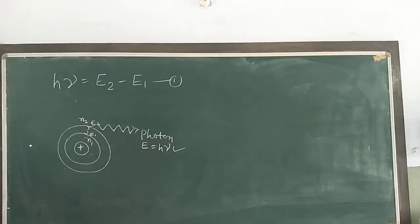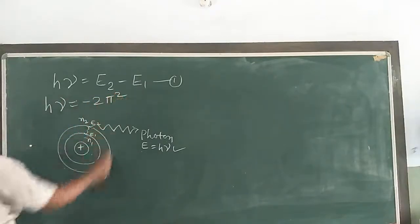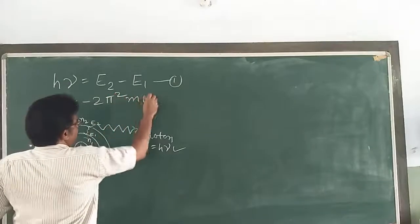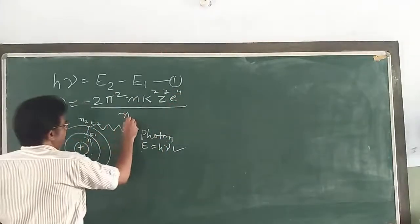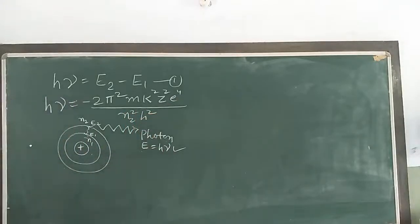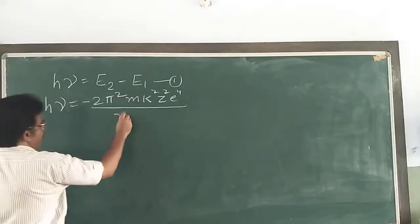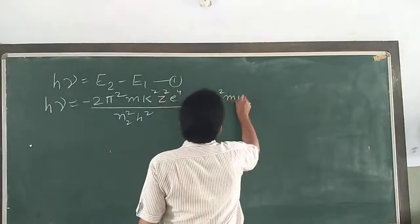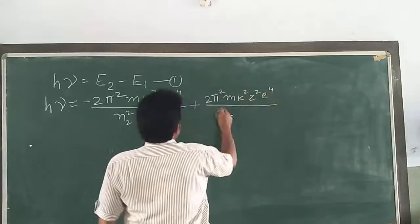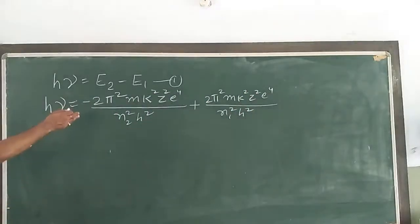Using the formula for energy, hν = E2 − E1 gives us: hν = −(2π²Mk²Z²e⁴)/(N2²h²) minus −(2π²Mk²Z²e⁴)/(N1²h²), which simplifies to hν = (2π²Mk²Z²e⁴/h²) × (1/N1² − 1/N2²). Write this down.